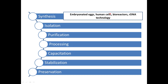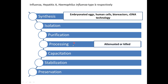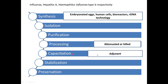Embryonated eggs are usually used for the influenza virus. Human cells are used for cultivation of the hepatitis A virus. rDNA technology makes use of Haemophilus influenzae type B. After synthesis, you isolate, purify, and process the vaccine. Processing differs depending on whether it's attenuated or killed. Capacitation involves addition of an adjuvant, followed by stabilization and preservation.